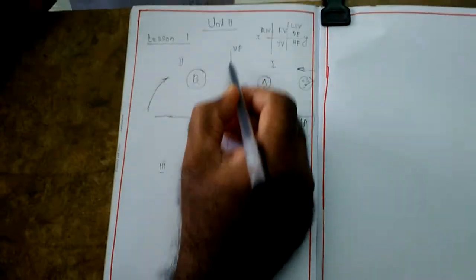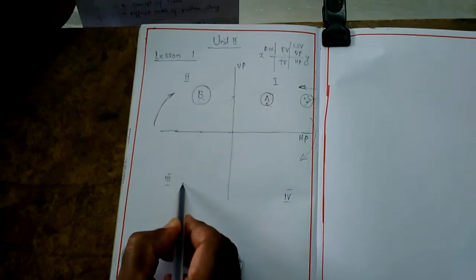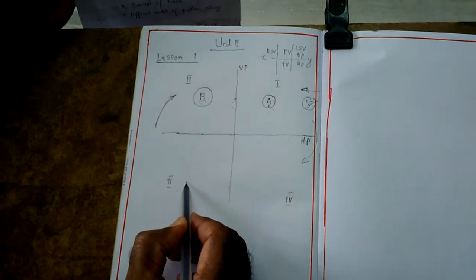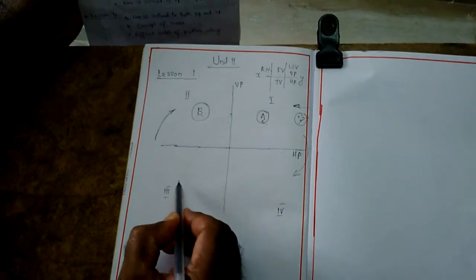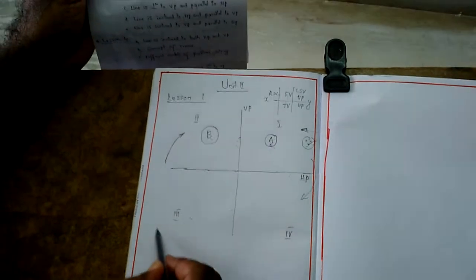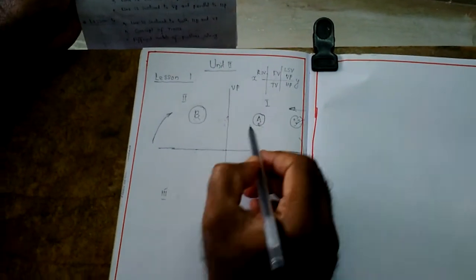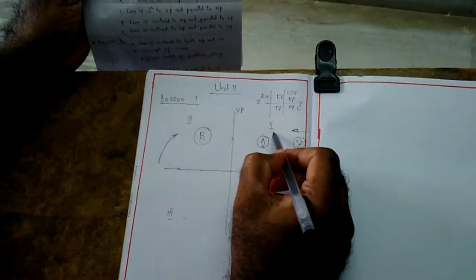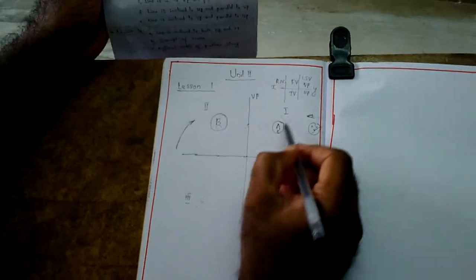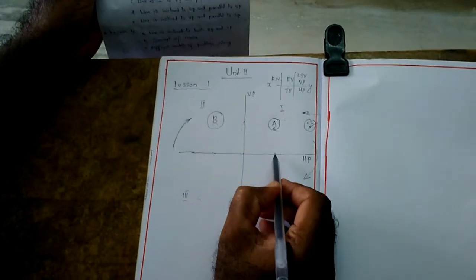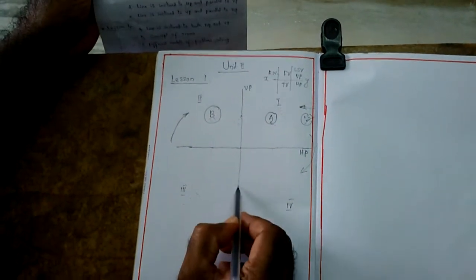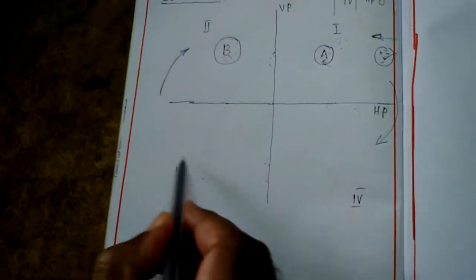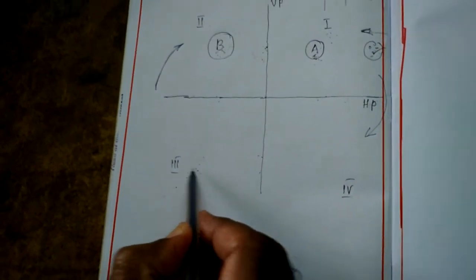Based upon the HP and VP, this is below the HP and behind the VP. That's why this is the second or third angle projection method. When you want to compare first angle and third angle: in first angle, the object is above HP and in front of VP; in third angle, it is below HP and behind VP. So the positions are different, and automatically these views are also different.